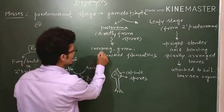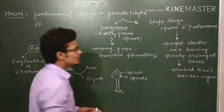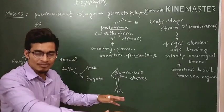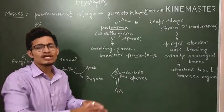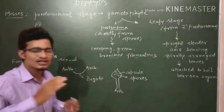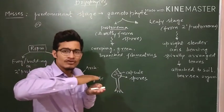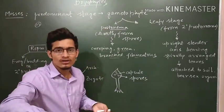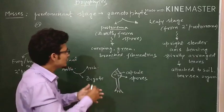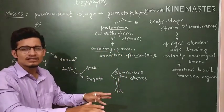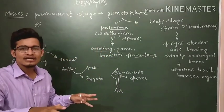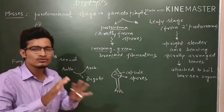The first stage is the creeping green branched or filamentous stage - it means it lies on the ground. It will be totally on the ground since it is creeping, and it is a green stage. Sometimes it is branched or filamentous. So the first stage is of very low height, lying on the ground - that is the creeping stage. It is green and filamentous at this early stage of development.